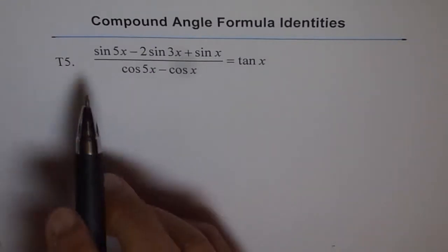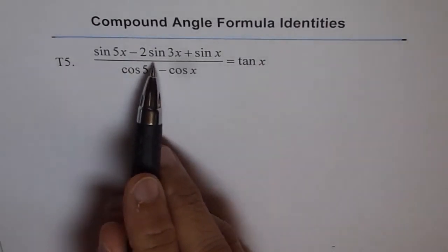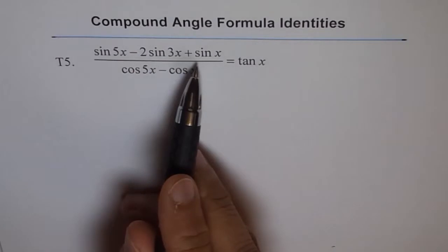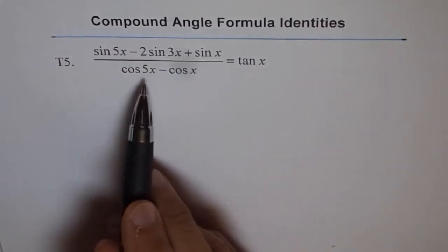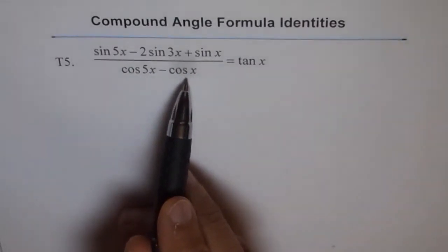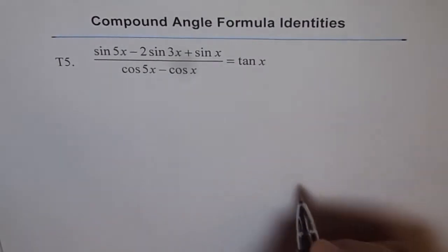It says: sin 5x minus 2 sin 3x plus sin x, divided by cos 5x minus cos x, equals tan x.